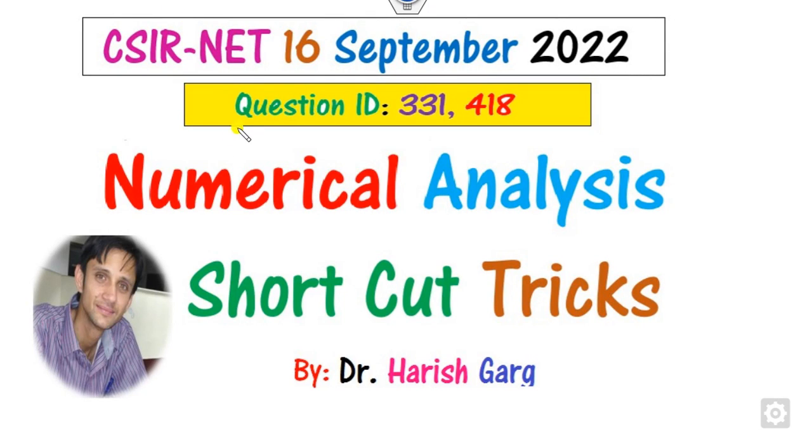Hello students, welcome to the next lecture on the CSIR NET examination. Today we will discuss numerical analysis questions 331 and 418, which are worth 4.75 and 3 marks respectively, totaling 7.75 marks.